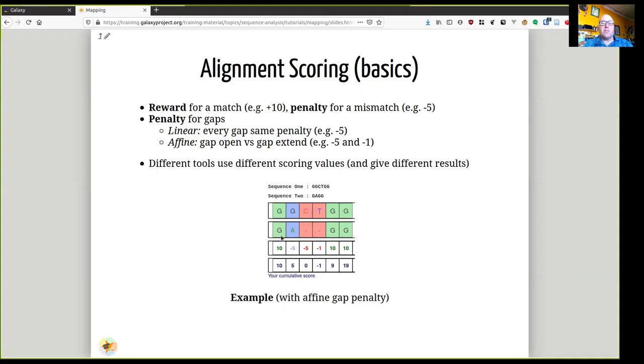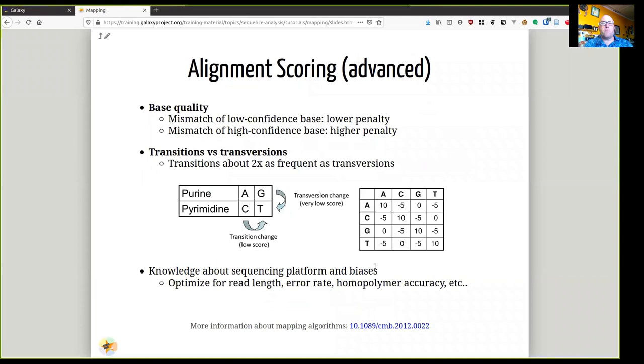So if we look at this example here of the matches and the mismatches, we see here a match, and this is the running score at the bottom. And then we get a mismatch, so that's a penalty, and we have to insert a gap, and that's a penalty. Then we have to extend the gap, and that's another penalty, but a smaller one. And then two matches at the end give us some positive values, so that ultimately you have a final score of 19 for this read at this position.